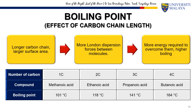Another factor affecting boiling point is carbon chain length. As the chain gets longer, the molecular surface area increases, meaning stronger London dispersion forces between molecules and more energy needed to break them, resulting in a higher boiling point. For example, methanoic acid (one carbon) boils at 101°C. Adding one more carbon to form ethanoic acid increases the boiling point to 118°C. Propanoic acid boils at 141°C, and butanoic acid with four carbon atoms reaches 164°C. This trend demonstrates how increasing carbon atoms enhances London dispersion forces, leading to higher boiling points.